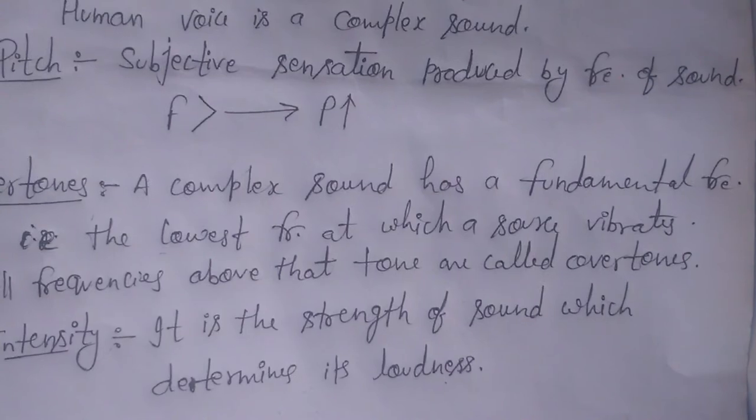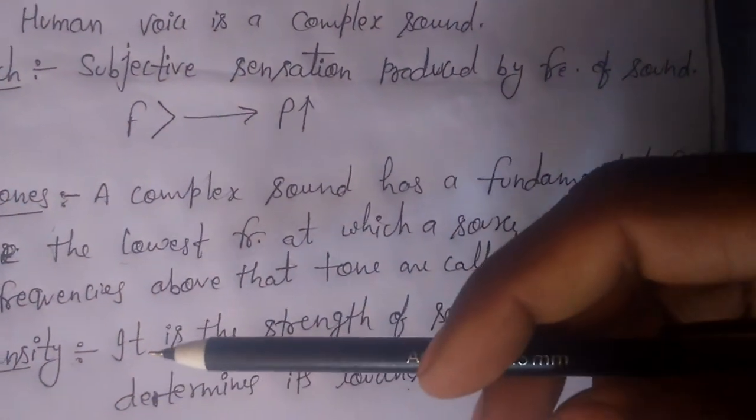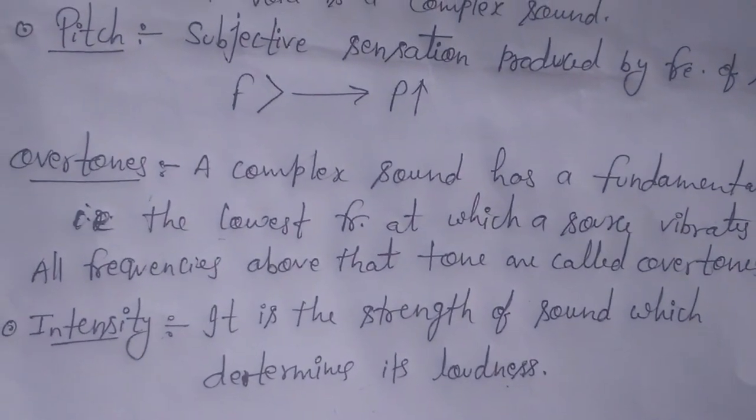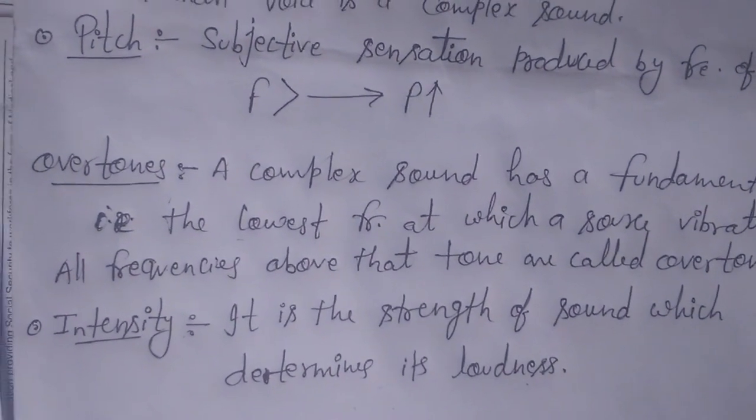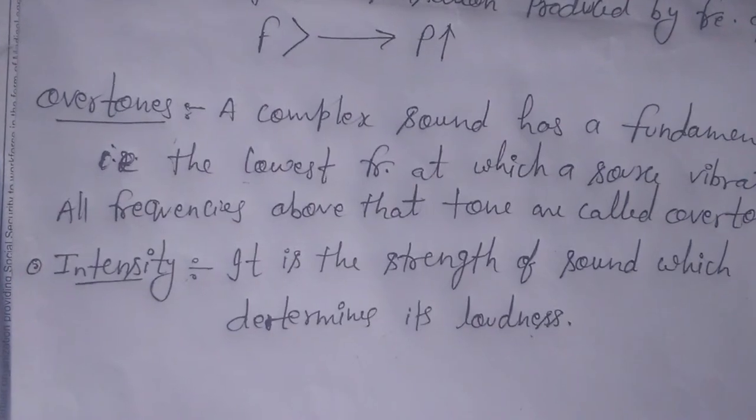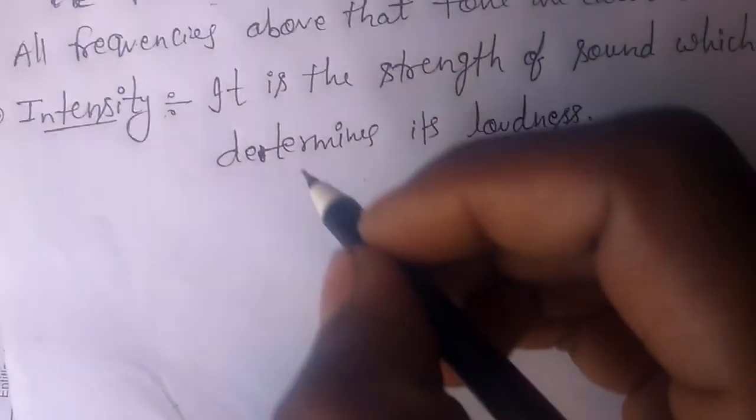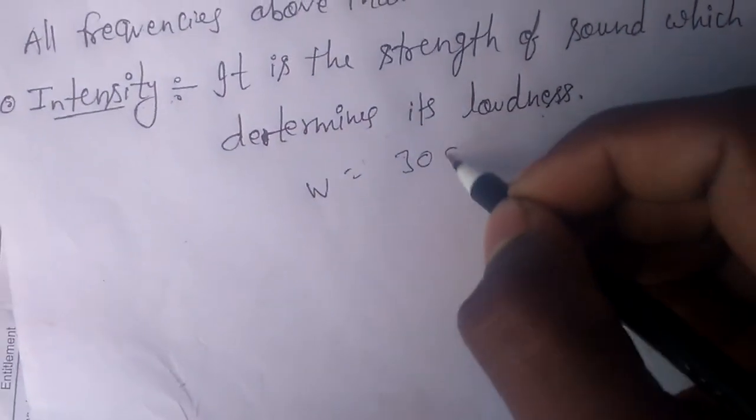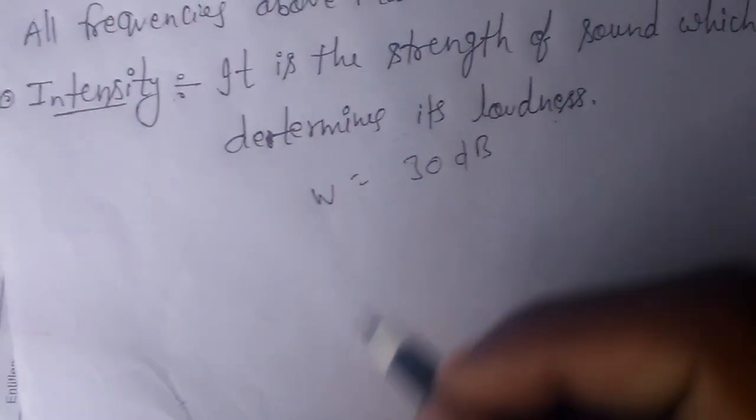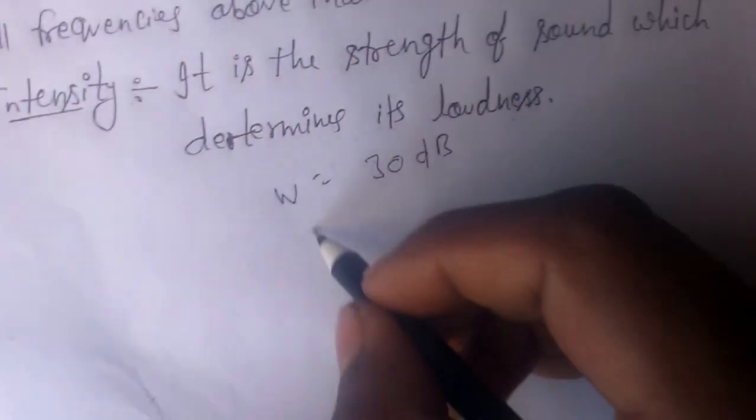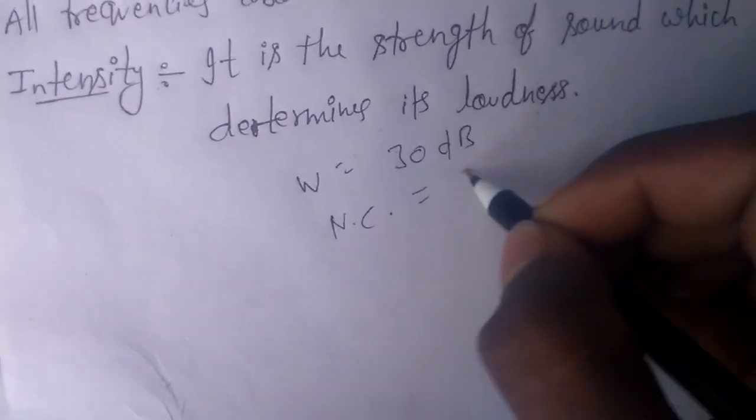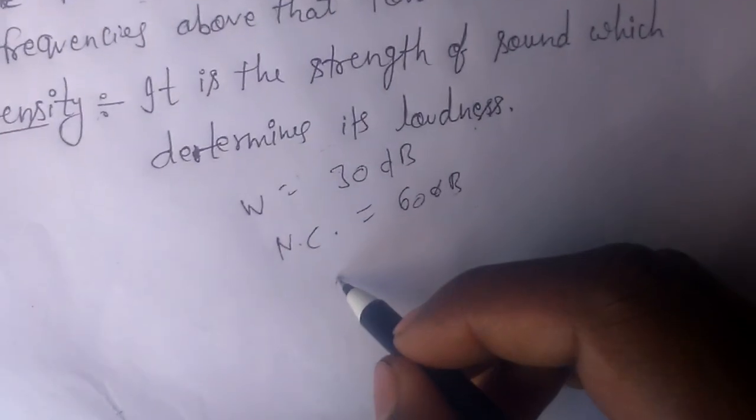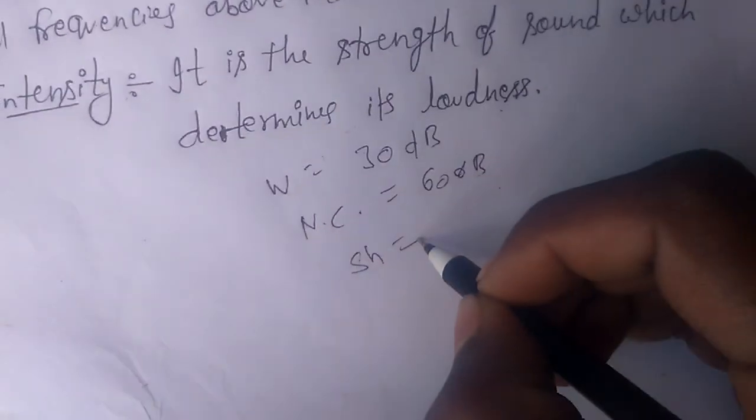Intensity is usually measured in decibels. Examples include: a whisper has 30 decibels, normal conversation has 60 decibels, and a shout has 90 decibels.